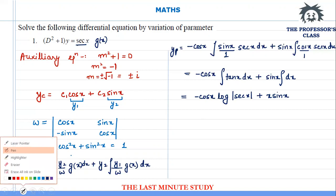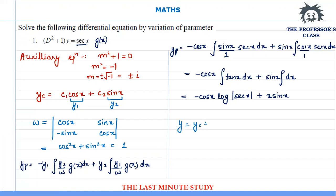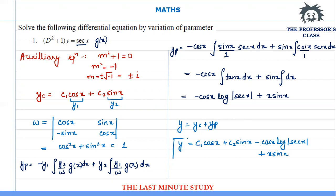The answer y consists of yc plus yp. The value of yc we already calculated is c1·cos(x) + c2·sin(x), and yp is -cos(x)·log|sec(x)| + x·sin(x). This is our final answer for Question 1. Let's try the next question.